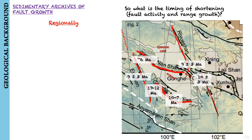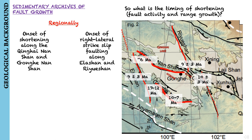Regionally, the onset of shortening along the Qinghai-Nanshan and Gonghe-Nanshan is similar to the onset of right-lateral strike-slip faulting along the eastern and western basin margins.